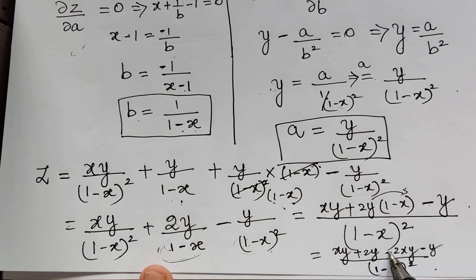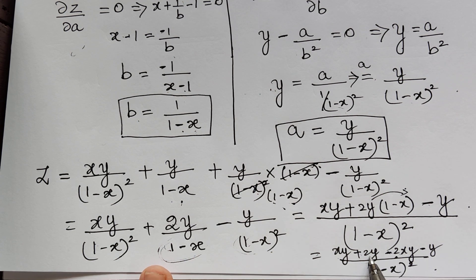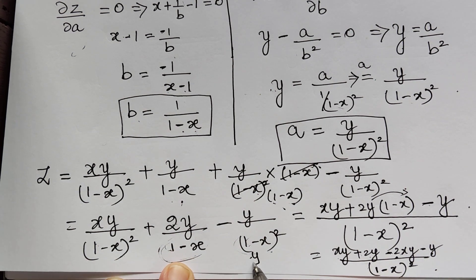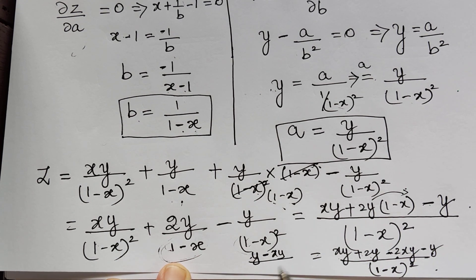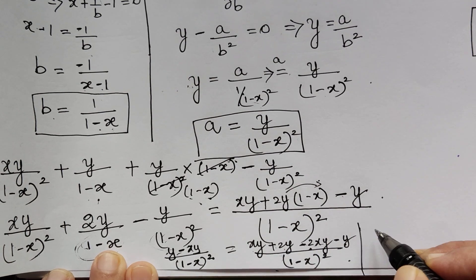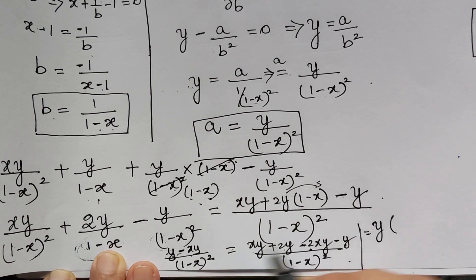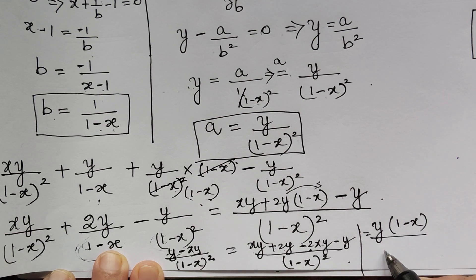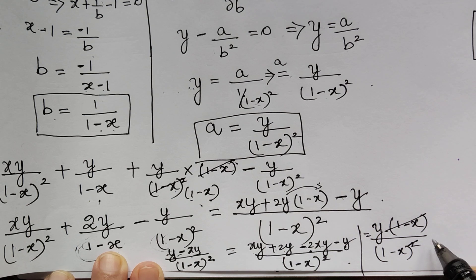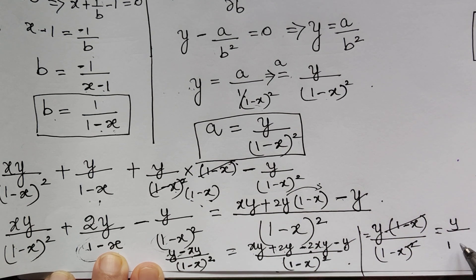Combining terms: minus 2xy and plus xy gives minus xy, and 2y minus y gives y. So the numerator becomes y minus xy divided by 1 minus x whole square. Taking y common in the numerator gives y times 1 minus x divided by 1 minus x whole square. One factor of 1 minus x cancels, leaving y by 1 minus x.